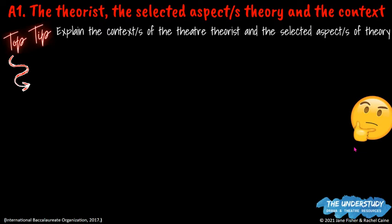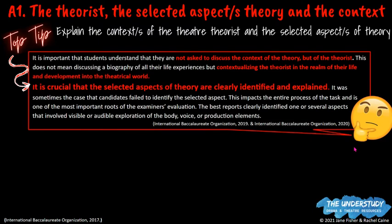Criterion A is about the theorist, the selected aspect or convention of your theory, and the overall context of the theorist. This criterion asks you to explain the context of your theorist — their background and what they've contributed to theatre as a whole — and also explain the particular aspect or convention that you've chosen from this theorist's theory. A top tip from the IB: in this section, you're not supposed to use Criterion A to discuss the context of your theory.